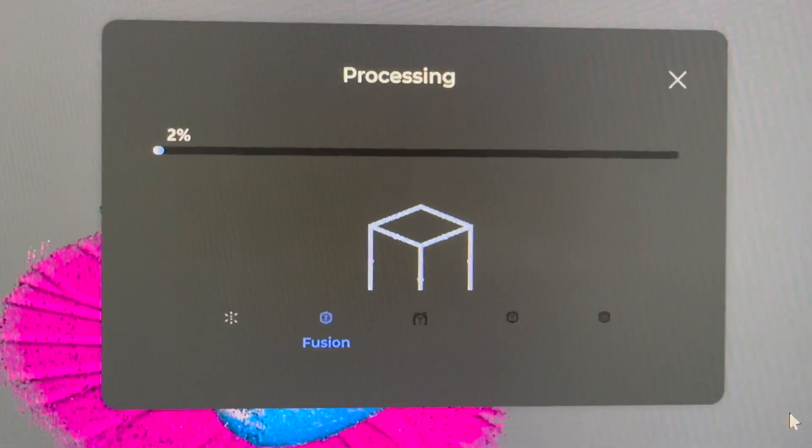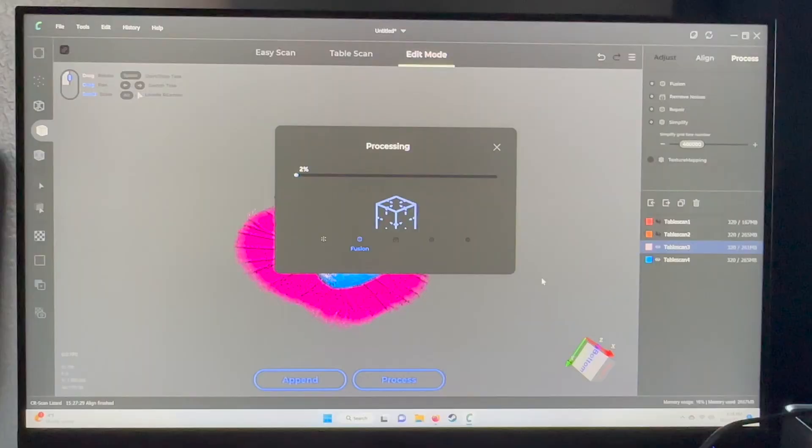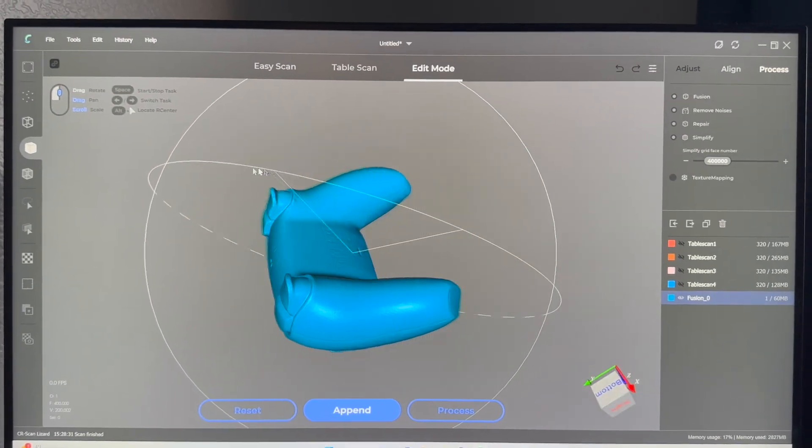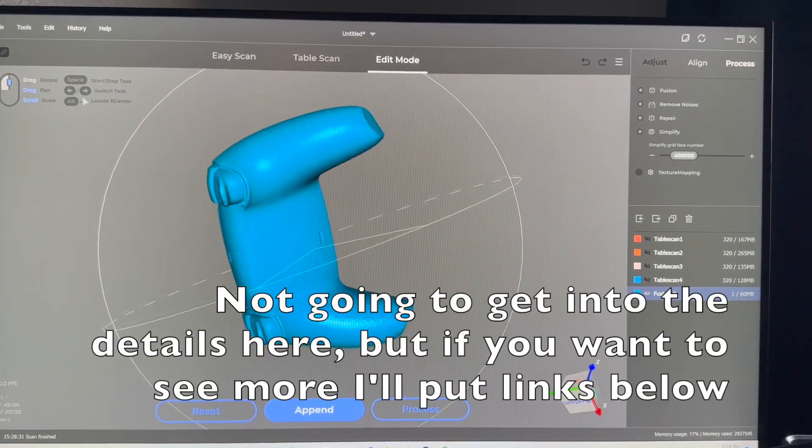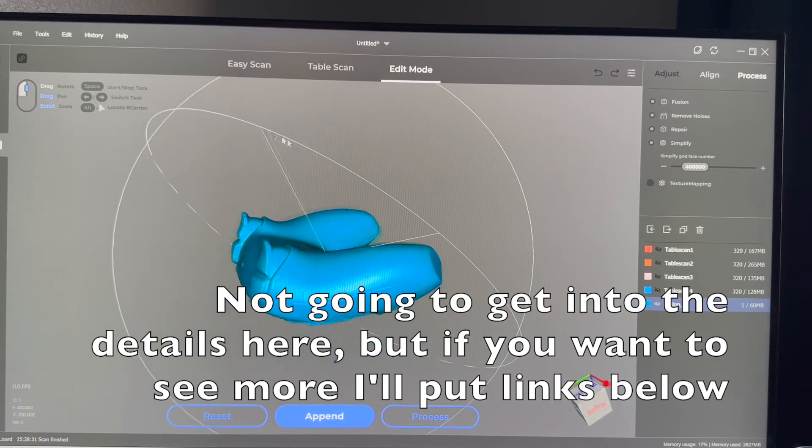So there's about five minutes to go from scan to having an OBJ file using this Creality 2 software. This user interface was something they were pretty proud of when they sent me the scanner, and I'd agree, it looks good.